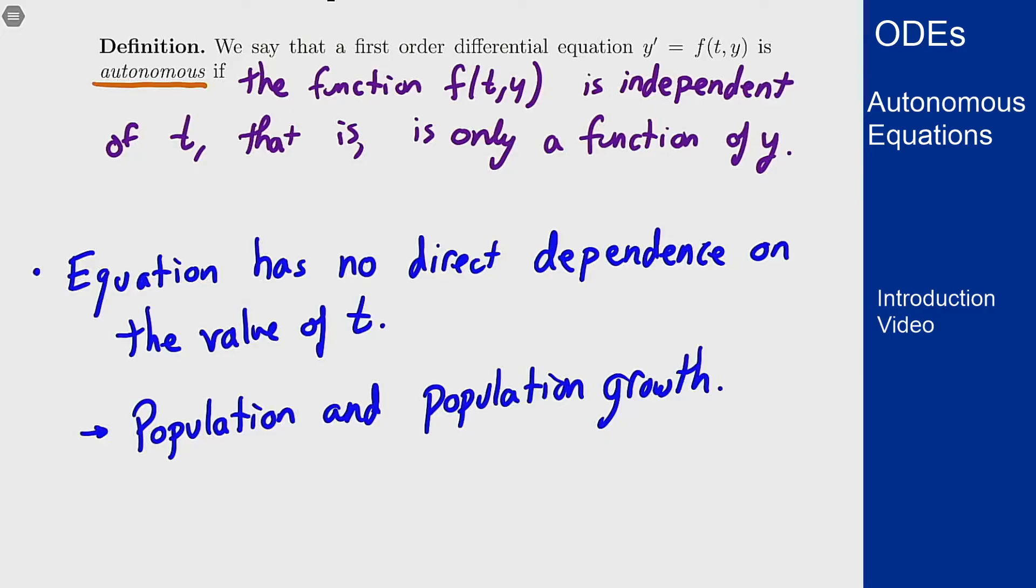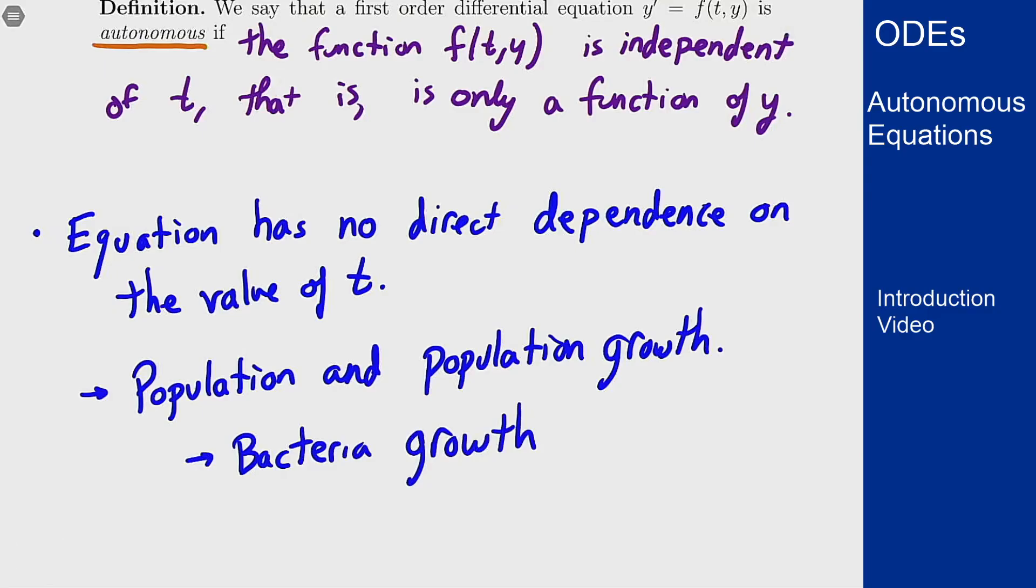The sense is that it doesn't depend on the actual value of t that's involved. It only depends on the population that I have inside the dish. It's independent of time. It only really depends on y or the population. And this works in the case where the growth rate of the bacteria is independent of time. It's going to do the same thing no matter what it is.